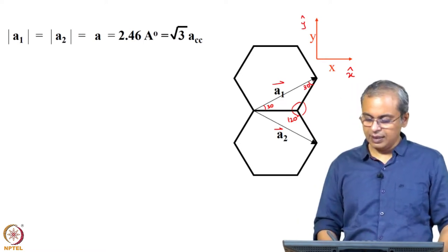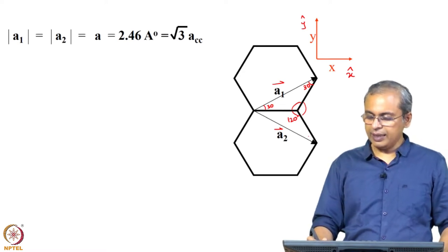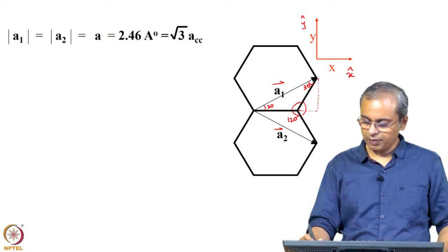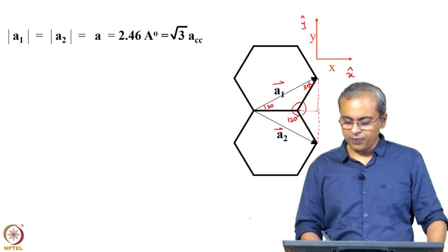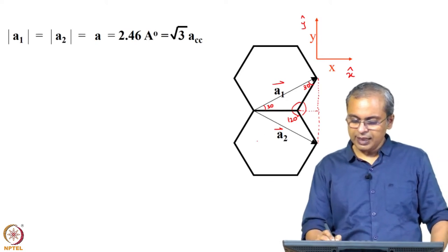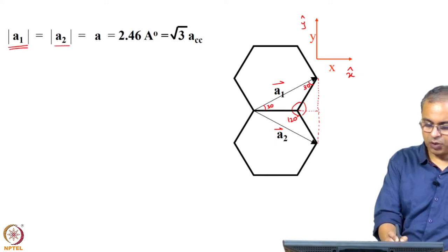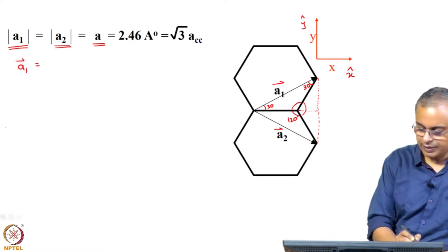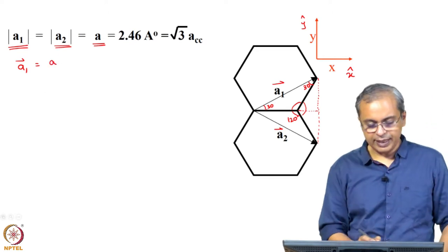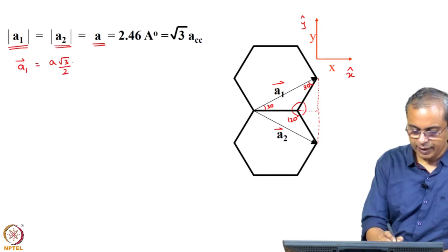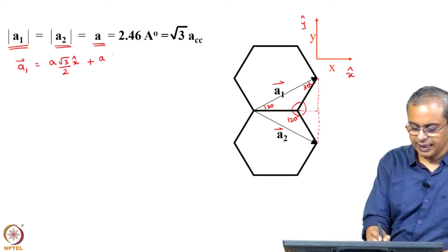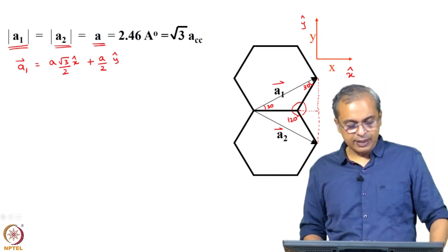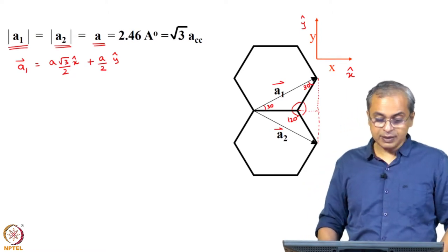If the magnitudes |a1| = |a2| = a, then a1 = a·cos30°·x̂ + a·sin30°·ŷ = (a√3/2)·x̂ + (a/2)·ŷ. For a2, you travel the same distance in x but go downward in y, so a2 = (a√3/2)·x̂ − (a/2)·ŷ.